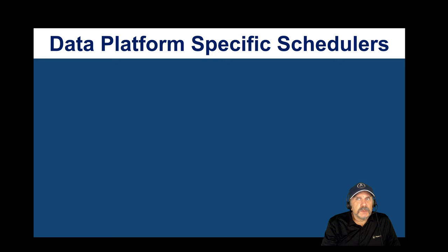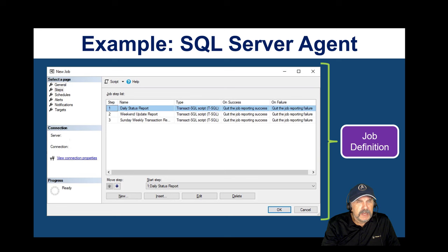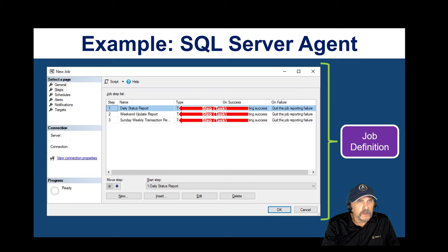SQL Server Agent is a data platform-specific scheduler I used for many years — a very powerful, awesome job scheduler. You have a job definition where you can schedule multiple job steps, and each step can be configured to run a SQL statement, call a stored procedure, call a function, run an SSIS package, or even run command prompt or PowerShell scripts. The ability to create discrete steps in order is really powerful.